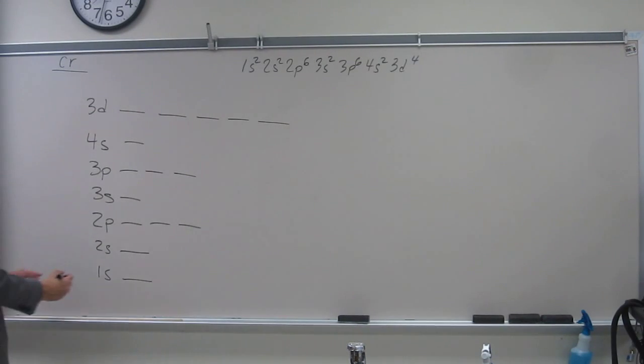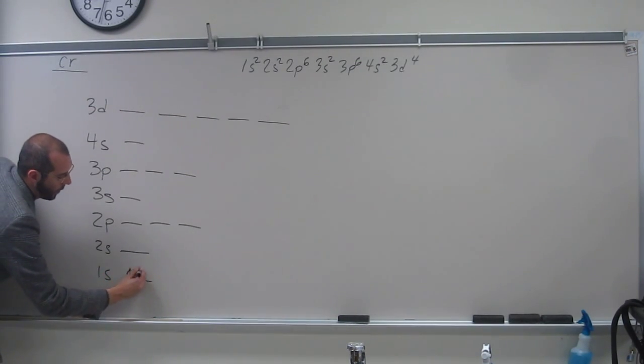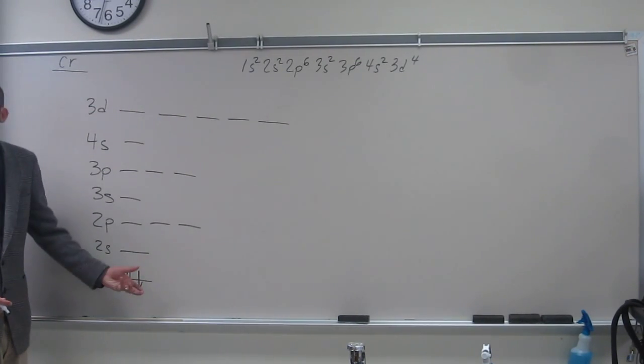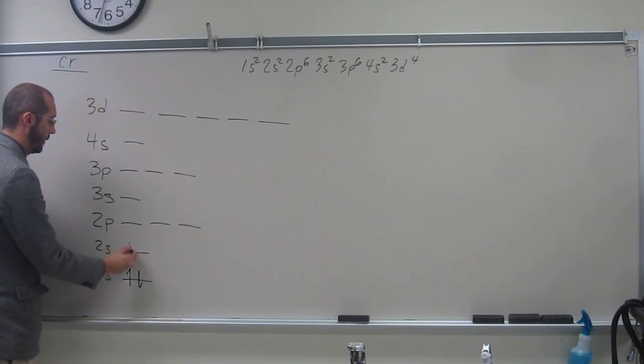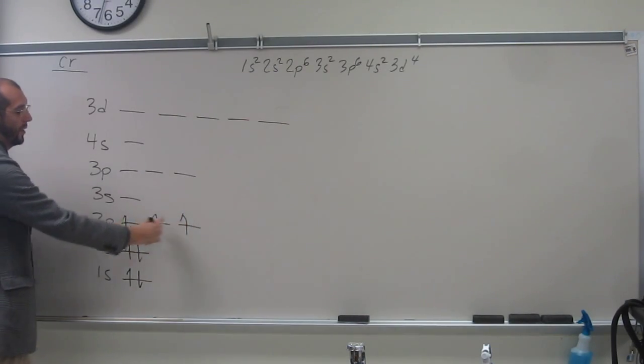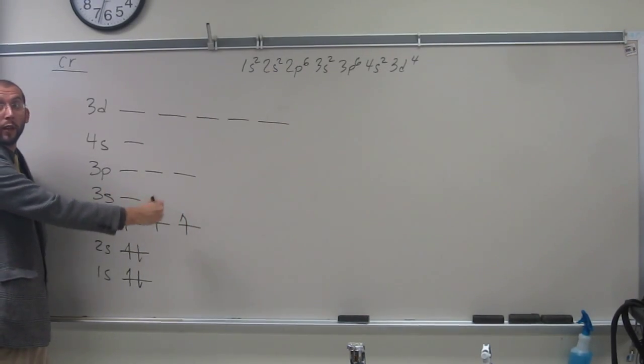Okay, remember Aufbau principle? Start at the bottom. Pauli exclusion principle, the second one has to go upside. Hund's rule, if we have degenerate orbitals, we fill them one at a time.